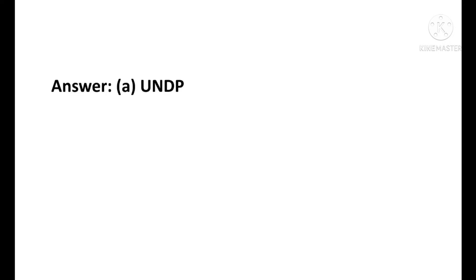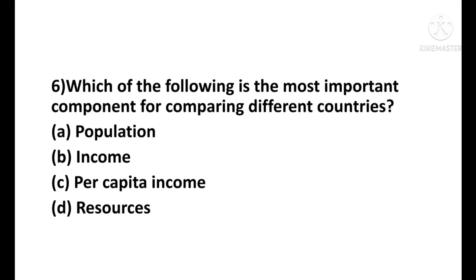The correct answer is Option A — UNDP. Question number 6: Which of the following is the most important component for comparing different countries? Option A: population. Option B: income.